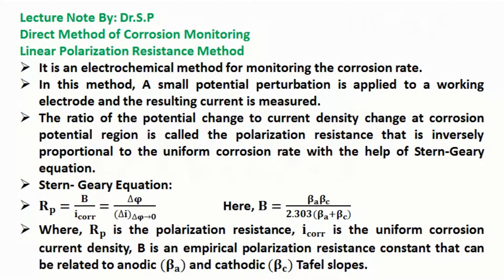According to the Stern-Geary equation, Rp equals b divided by Icorr, and this is equal to the change in potential divided by the change in current density. Here, b equals (βa × βc) / (2.303 × (βa + βc)), where Rp is the polarization resistance, Icorr is the uniform corrosion current density, and b is an empirical polarization resistance constant that can be related to the anodic Tafel slope βa and cathodic Tafel slope βc.